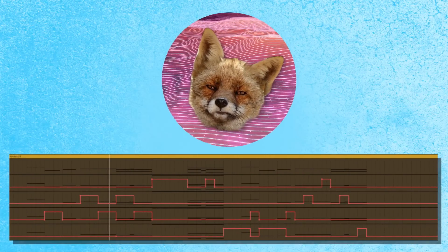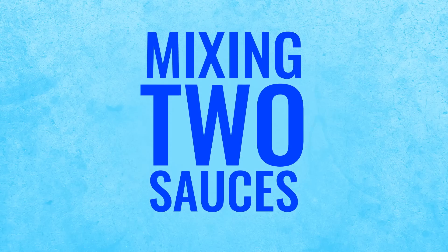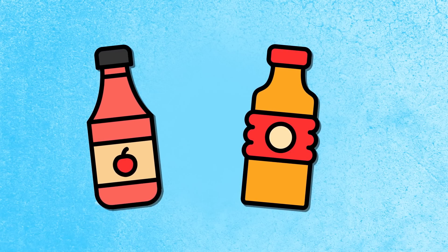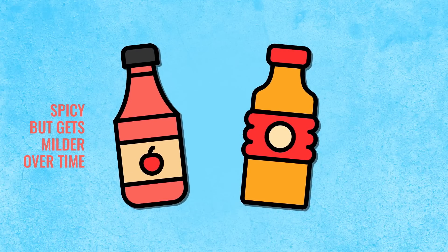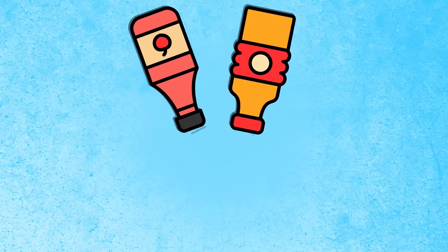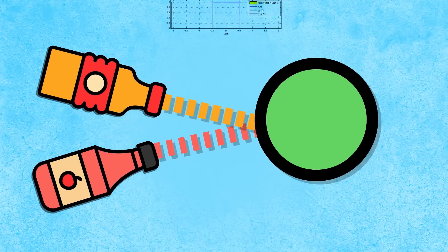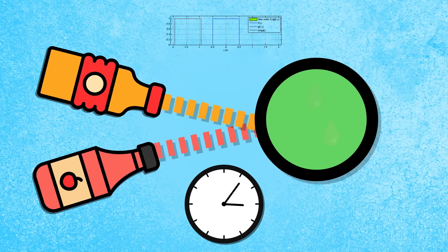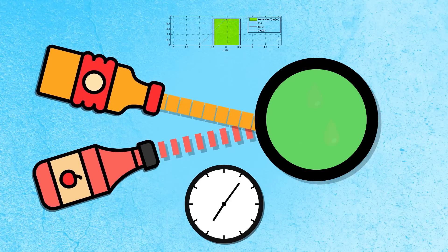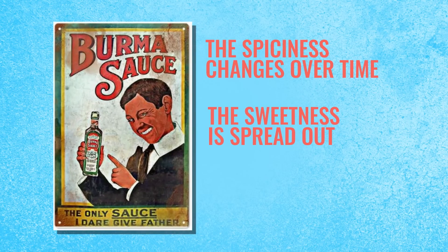Here's a simple explanation of convolution in everyday terms. Convolution is like mixing two ingredients to create a new flavor. Imagine you have two sauces: a spicy sauce that gets mild over time, and a sweet sauce that stays consistent. When you mix these sauces, convolution determines how the flavors combine at each moment. It considers how much spicy sauce is left, how much sweet sauce they're adding, and how the flavors interact.